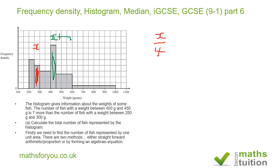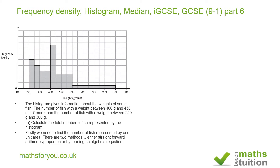You cannot do x divided by four because you have four square units there, equal to x plus seven divided by 7.5, because we have 7.5 square units in this column. When you work it out, x equals 8 — which means that each of these square units is equivalent to two fish.